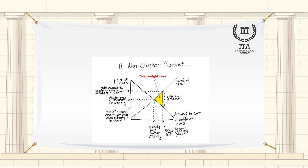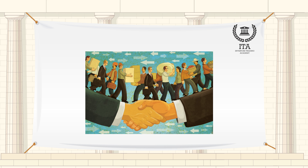Deadweight loss can be stated as the loss of total welfare or the social surplus due to reasons like taxes or subsidies, price ceilings or floors, externalities, and monopoly pricing. It is the excess burden created due to loss of benefit to the participants in trade, which are individuals as consumers, producers, or the government.